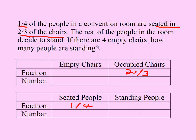There are four empty chairs. This is not a fraction — it's a number about empty chairs, so it goes here. These are the three things we know from the question. Using these and our knowledge of fractions, subtraction, and multiplication, we'll fill out the remaining spots. The question asks how many people are standing — that's what we're looking for.